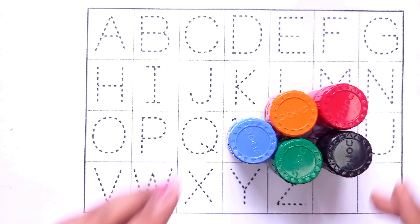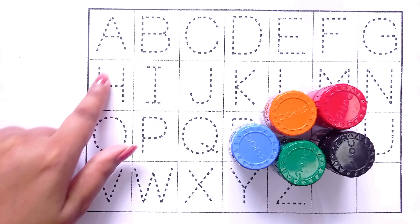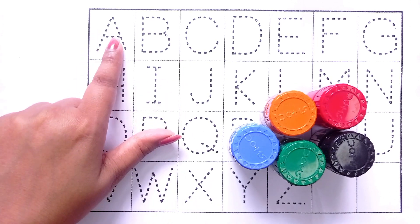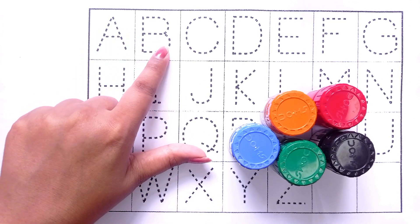Hello children, welcome to Minikids channel. Let's learn alphabets. A for Ant, B for Book.